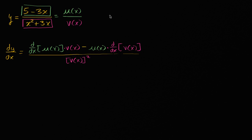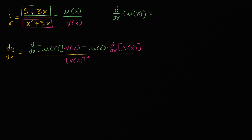So let's do that. The derivative with respect to x of u of x — that's five minus three x — the derivative of five is zero, and the derivative of negative three x is just negative three. So the derivative of u of x equals negative three. If any of that looks unfamiliar, I encourage you to review derivative properties and maybe the power rule.